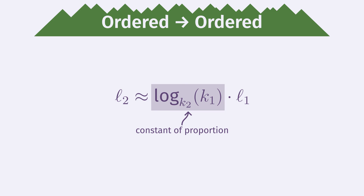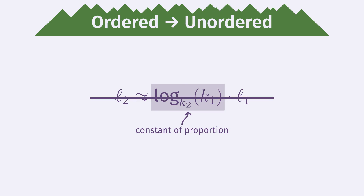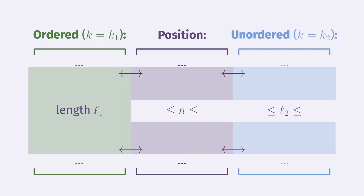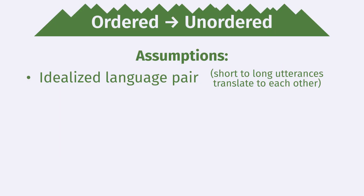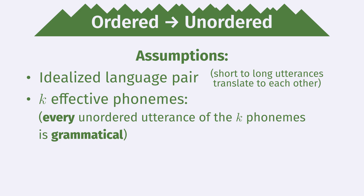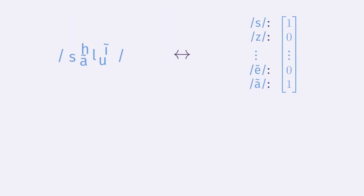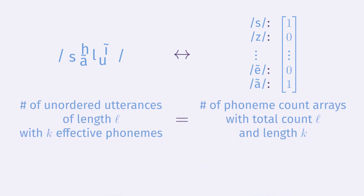This result should be fairly intuitive. However, it does not hold when translating into an unordered language. To analyze this, we do the same calculation but now translating from an ordered to an unordered language. We again assume the two languages form an idealized language pair, and that the unordered language has K effective phonemes so every unordered utterance using those K phonemes is grammatical. But how many utterances is that? Since the language is unordered, the only information in an utterance is the array of phoneme counts, so the number of distinct utterances of length L is the number of distinct phoneme count arrays with total phoneme count L using K phonemes.